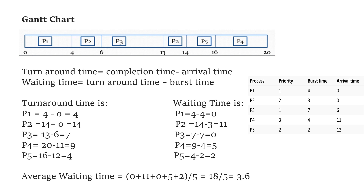It is now time to calculate the assessment measures of the scheduling algorithm, which are the turnaround time and waiting time. The turnaround time is calculated from the formula, and based on the completion time from the Gantt chart, we can find the turnaround time of each process. From the turnaround time, we can find the waiting time. The average waiting time has been calculated as 3.6.